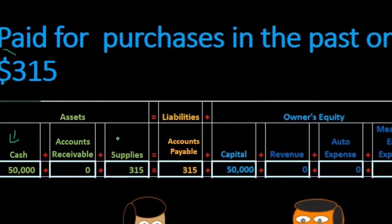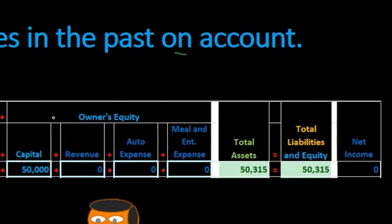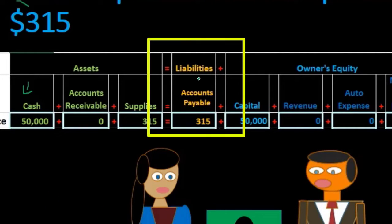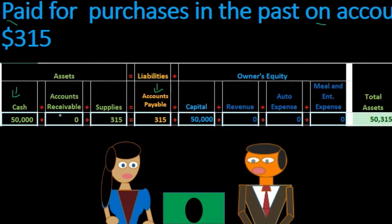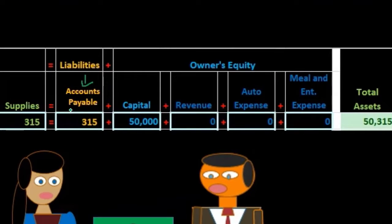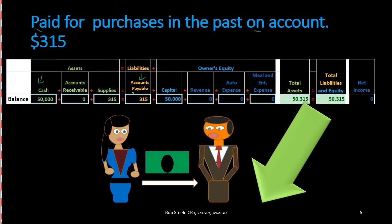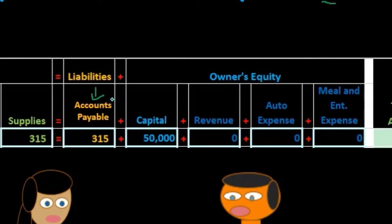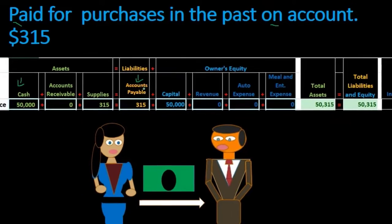If the original purchase was on account — and 'on account' is a key term meaning either accounts receivable or accounts payable — in this case accounts payable, we know it must be going down for at least two reasons: cash went down on the left side of the equal sign, and if accounts payable is the other account affected on the right side, it too must be going down.